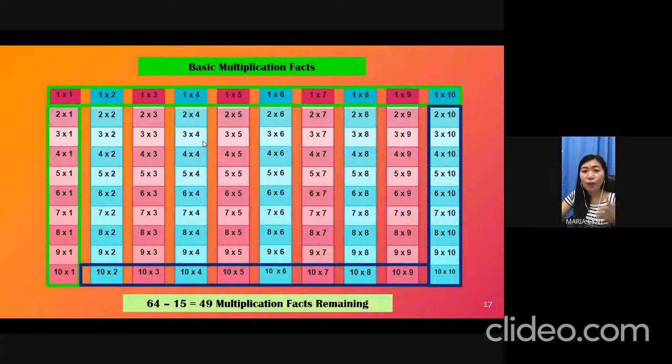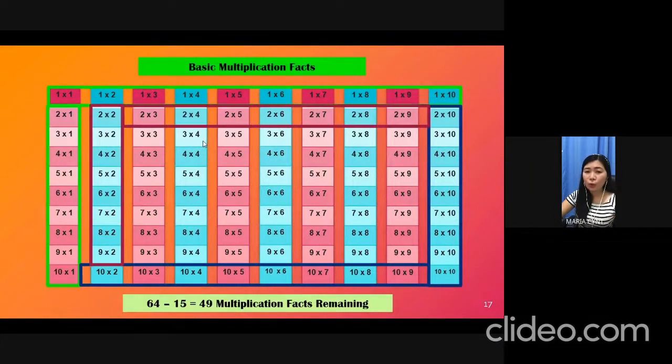Very easy, right? Now from the three rules, you'll know 51 multiplication facts. That means you have 49 multiplication facts remaining. It's very simple, right?